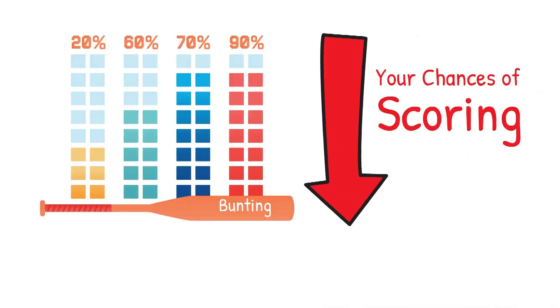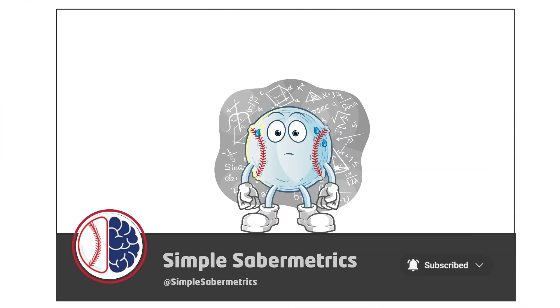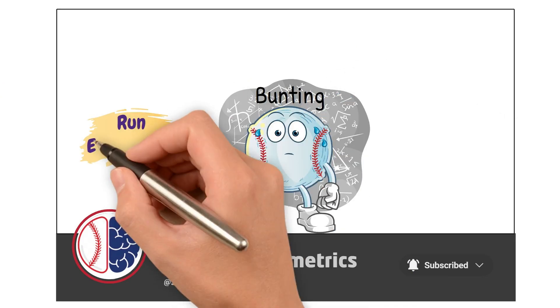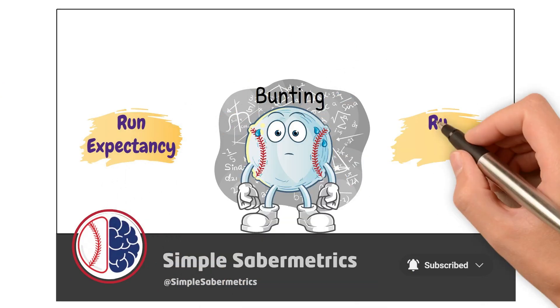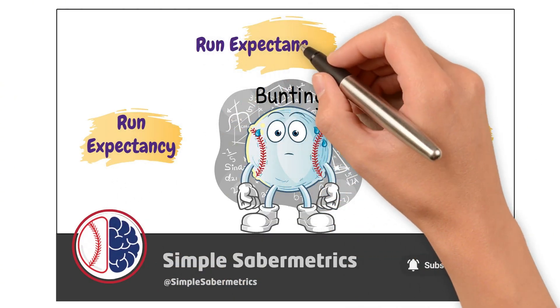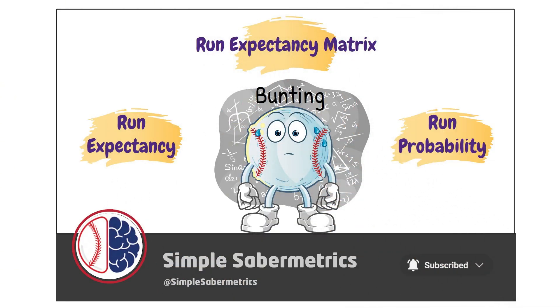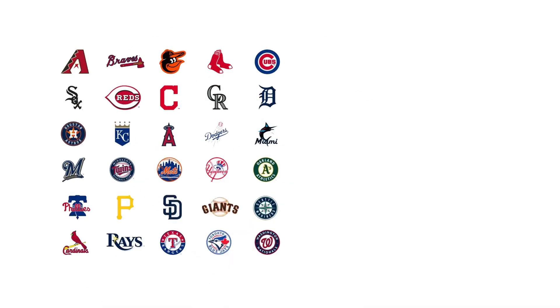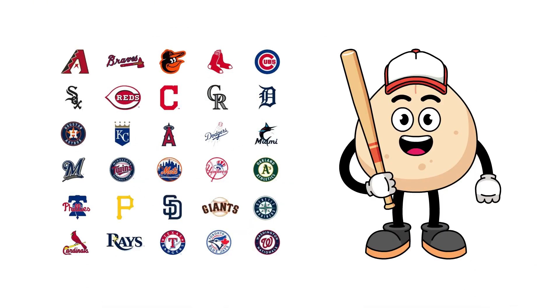In this video, we're diving into the numbers behind bunting, using run expectancy, run probability, and the run expectancy matrix to explain why modern teams are putting the bat back on their shoulders.